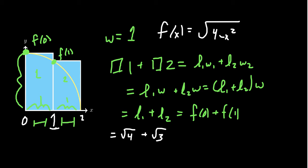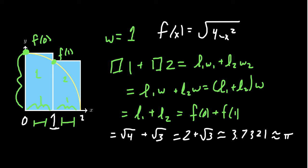So 2 + √3 ≈ 3.7321. We claim this is an estimate of π. Is it a very good estimate? Not the best — rounding to the nearest whole number gives 4. π is approximately 3.14159, so it's not perfect, but better than saying π is 17.